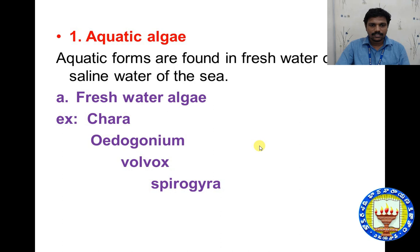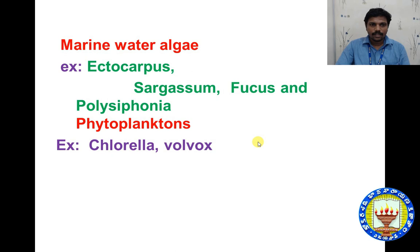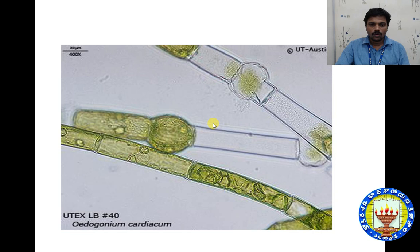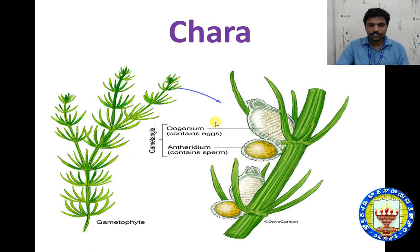The freshwater algae are Chara, Oedogonium, Volvox, and Spirogyra. The marine water algae are Ectocarpus, Sargassum, Fucus, and Polysiphonia. Some phytoplanktons — examples: Chlorella and Volvox. This is the Volvox structure, and Chara.